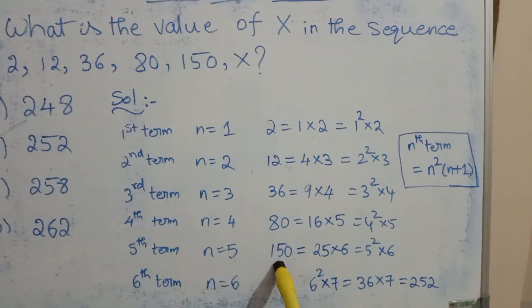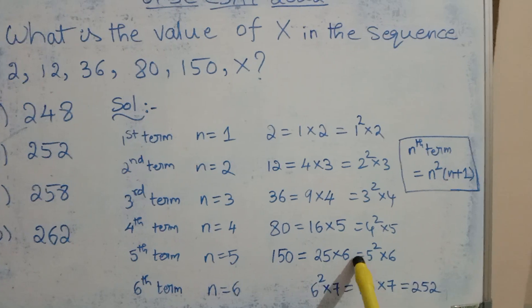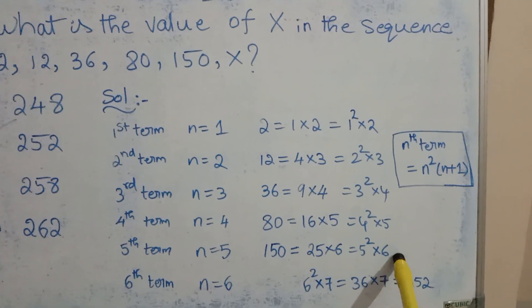150 can be written as 25 x 6 which is 5 square x 6.